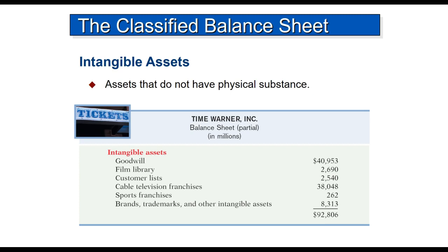Intangible assets, such as goodwill, have no physical presence, but are nevertheless very important assets for many businesses. Coca-Cola, Nike, Apple — all of them have what are called brands or trademarks and other intangible assets. So they are listed separately as well, and that concludes the assets.